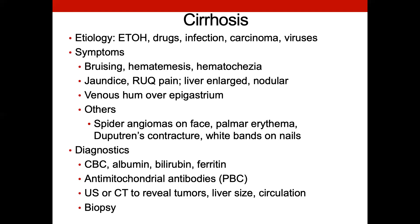To assess for cirrhosis in the clinic setting, we want to check the CBC, albumin, bilirubin, and ferritin. Mitochondrial antibodies are expensive and take a long time — typically those will be run by a specialist. Then an ultrasound to check size, circulation, and what's going on, and a CT if we're thinking there may be a tumor. Typically I'll do a CT after performing an ultrasound. Also, the difference between chronic and acute cirrhosis: if it's chronic, you'll see the ALT greater than the AST by two times, unless it's alcohol-related.